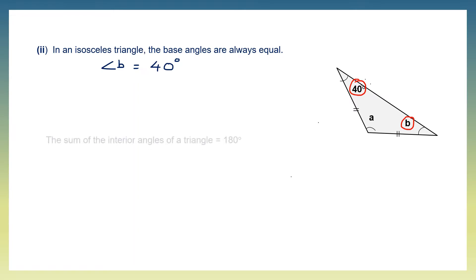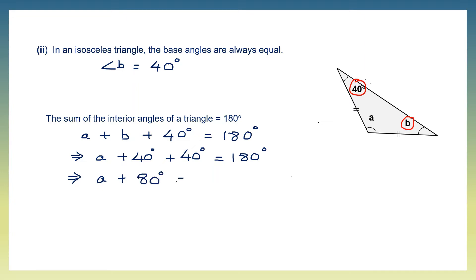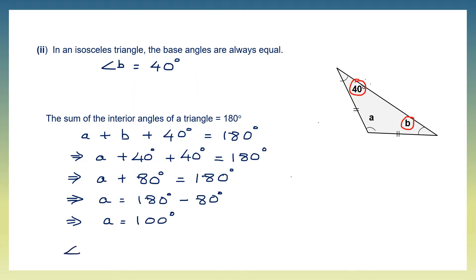Now to find the value of angle a, let's use the property that the sum of interior angles of a triangle equals 180 degrees. So angle a plus b plus 40 degrees equals 180 degrees. Substituting, a plus 40 plus 40 equals 180, so a plus 80 equals 180. Therefore angle a equals 180 minus 80, which is 100 degrees.